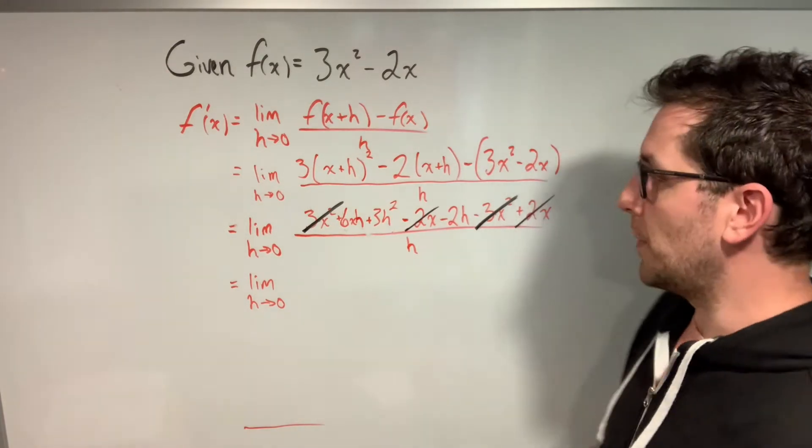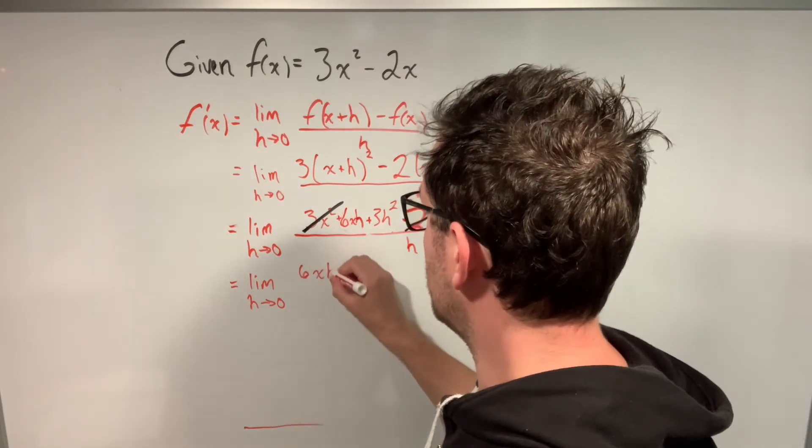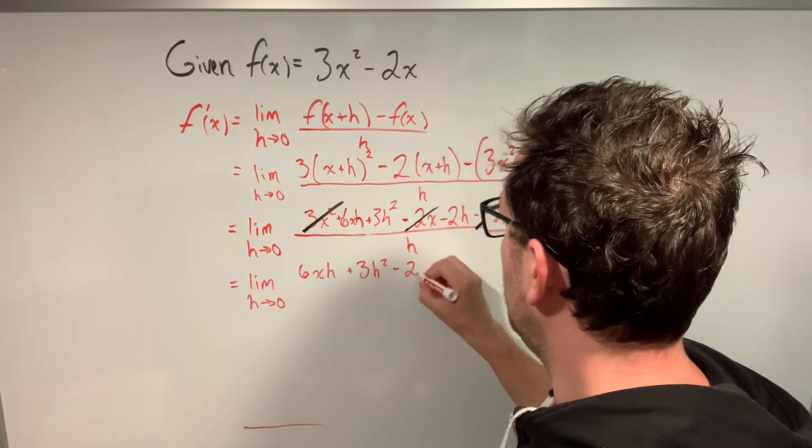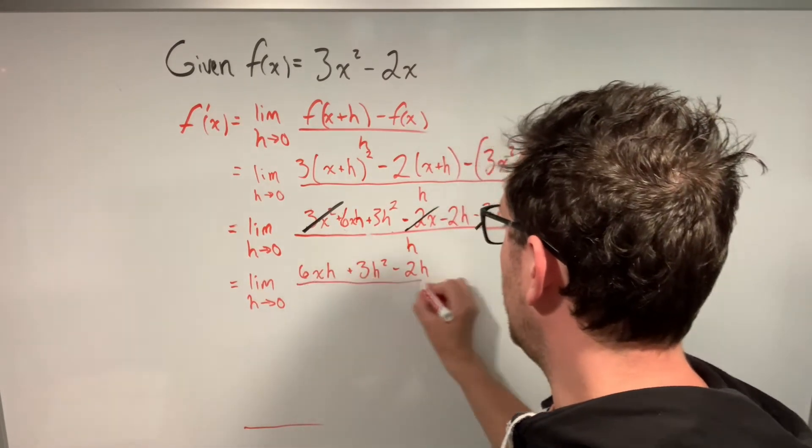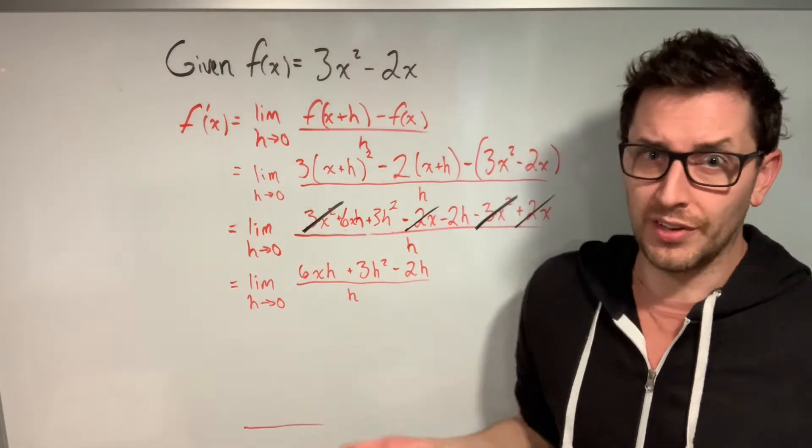The next thing I'm going to do is just clean this up a little bit. I'm just going to get rid of all the stuff I canceled. So I'm left with 6xh. I'm adding 3h², and I'm subtracting 2h, and I'm dividing by h still. And we are finally ready to start working with this mysterious h.